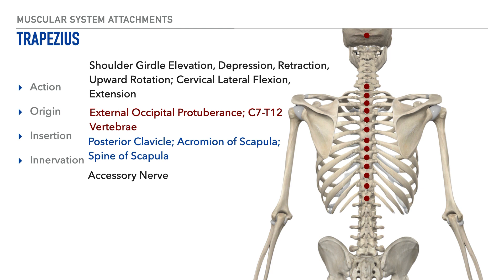Its insertion is on the posterior aspect of the clavicle, acromion, and on the spine of the scapula. Lastly, the trapezius is innervated by the accessory nerve.